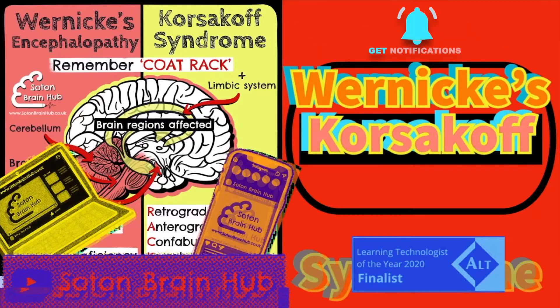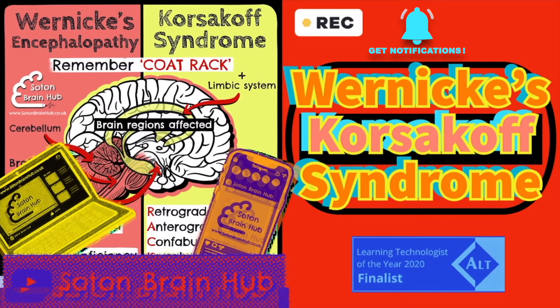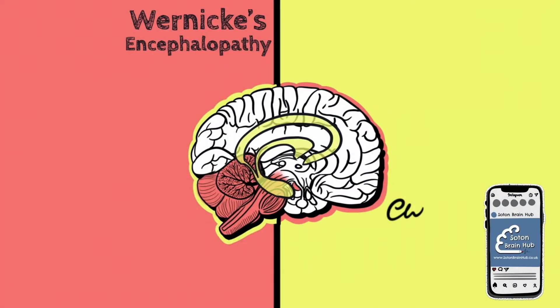Hello and welcome to another Sot & Brain Hub video. My name is Charlie and today I'll be giving you a quick look at Wernicke-Korsakoff syndrome. Wernicke syndrome and Korsakoff syndrome are two related neurological disorders that often occur together due to thiamine deficiency, most commonly resulting from long-term alcohol dependency. Wernicke's encephalopathy represents the acute phase and Korsakoff syndrome represents the chronic phase.